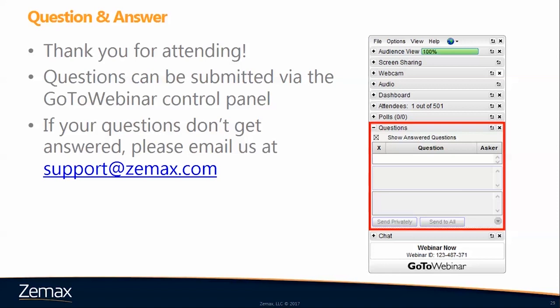The first question: to calculate field height for the image simulation tool, you need the max field — how do you calculate it? This is actually very straightforward: it's just the maximum field setting in your field data editor. The calculation varies depending on whether you're using rectangular or circular normalization. If you're specifying fields in X or Y, it's just the maximum value; otherwise a little trigonometry is needed.